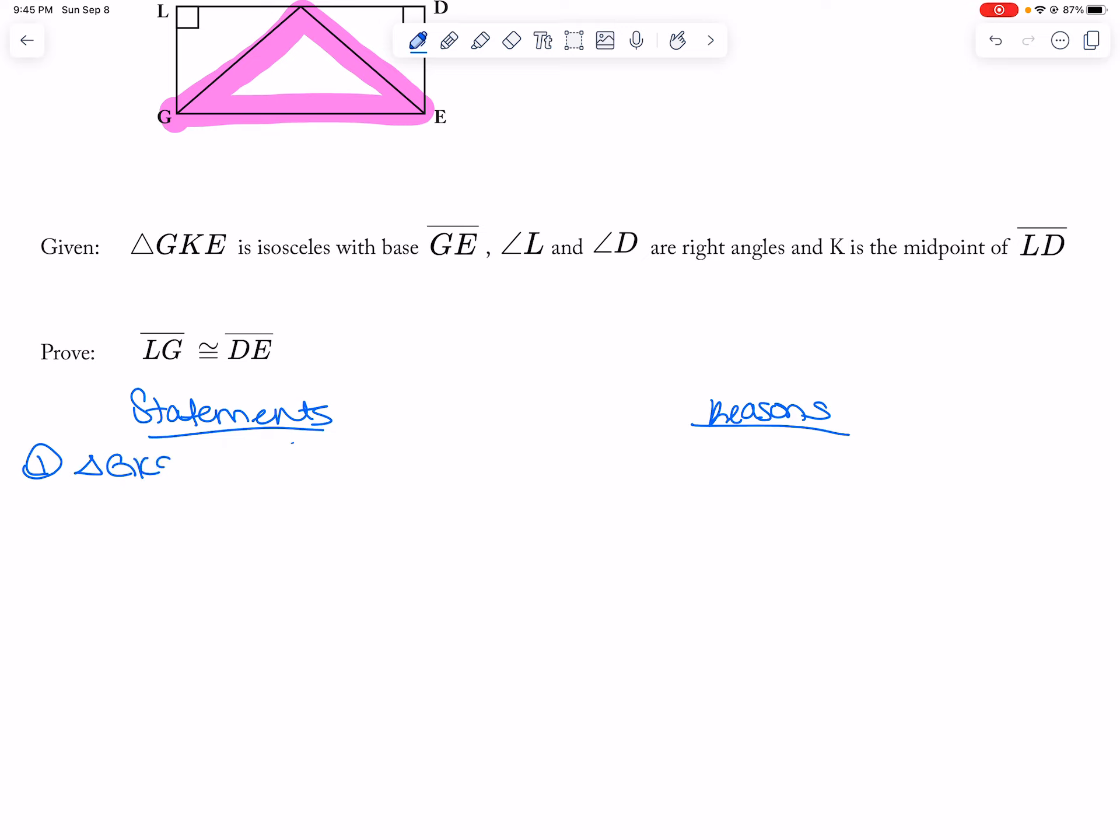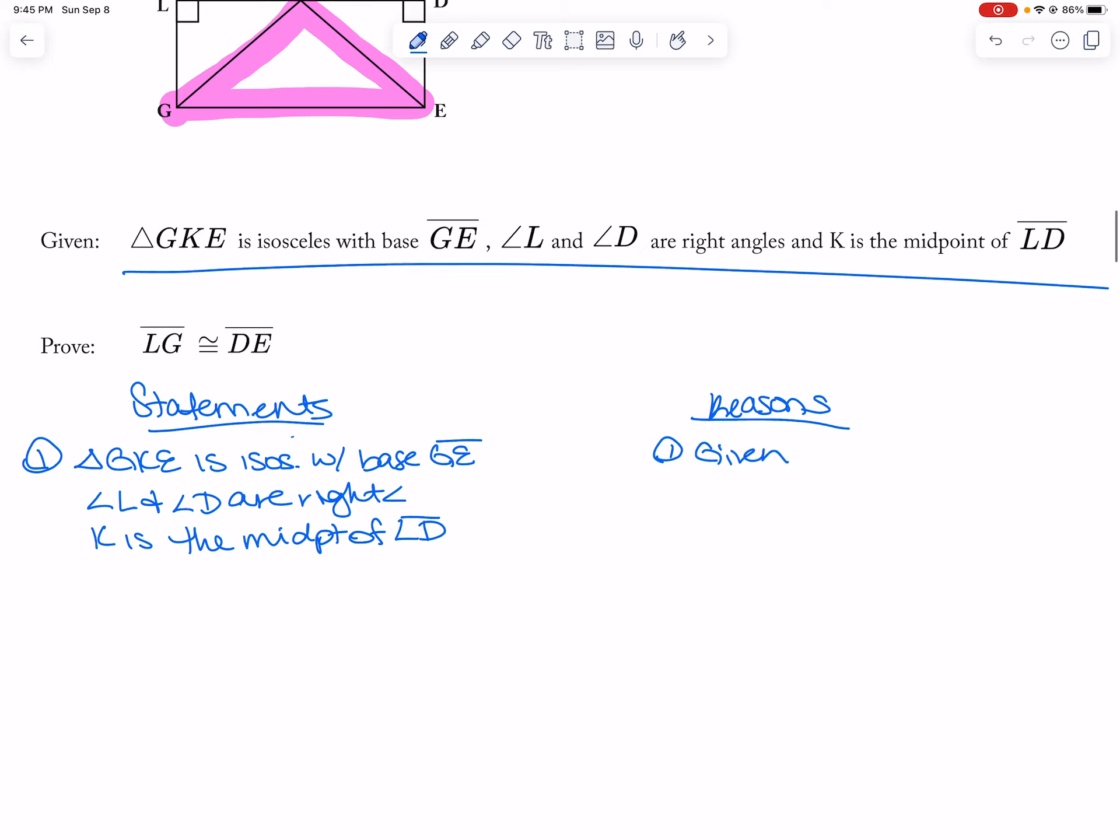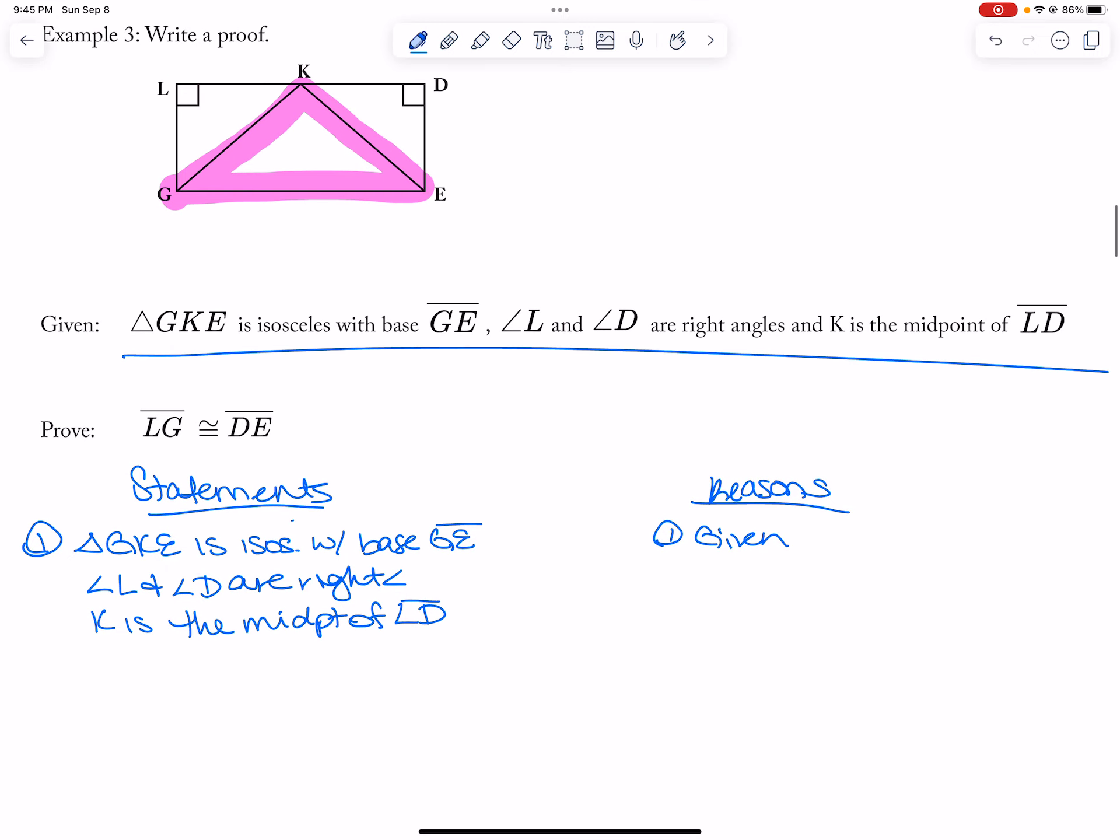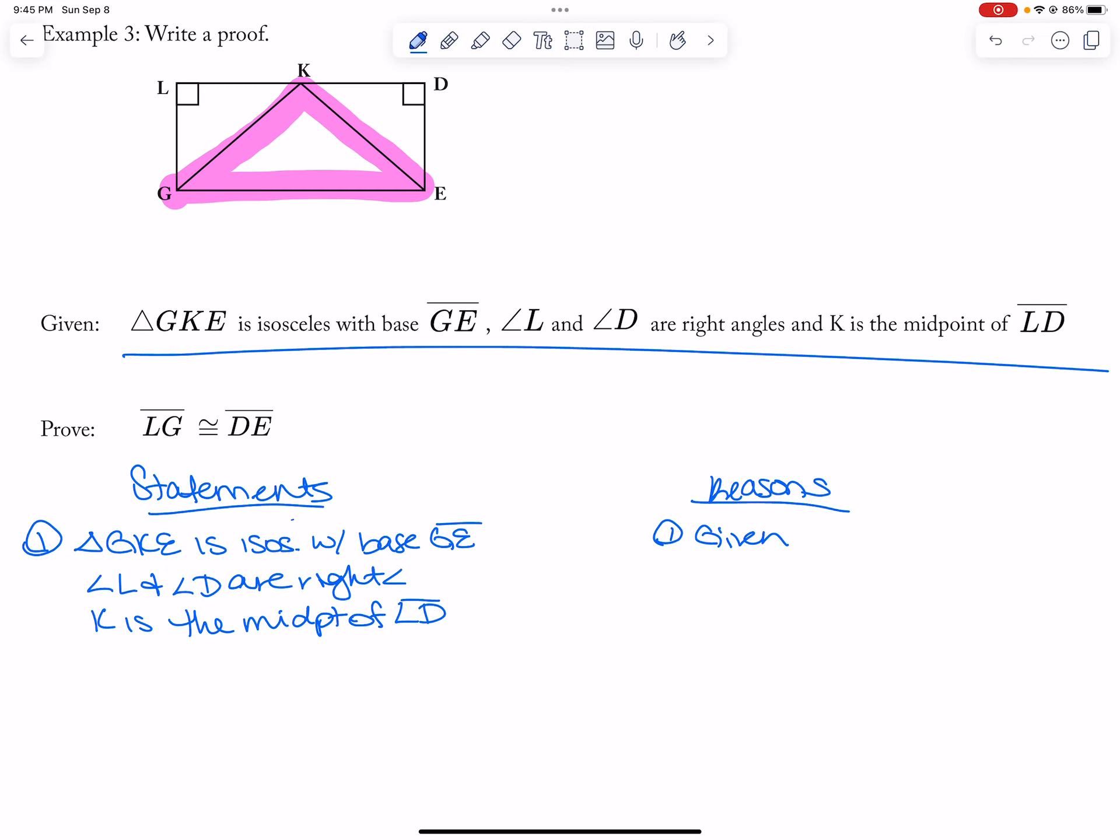So like triangle JKE is isosceles with base GE, angle L and angle D are right angles, and K is the midpoint of LD. So all of these are given, right, because they're all right there. So I can do that to start off with, and then I can start to do other things.